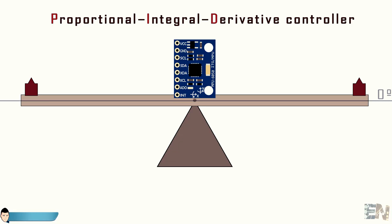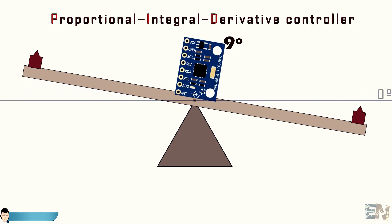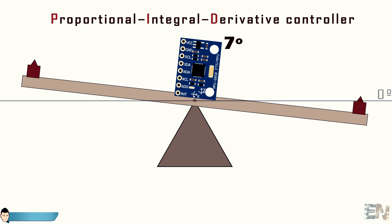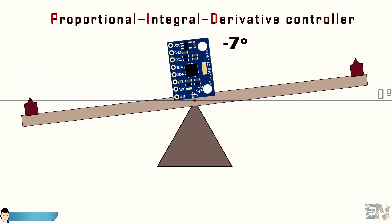The MPU6050 module will give us gyro and acceleration data. Using this data and applying some filters we obtain the real inclination angle of the metal bar. We will see the entire code and how to obtain the data and the angle a little bit later.